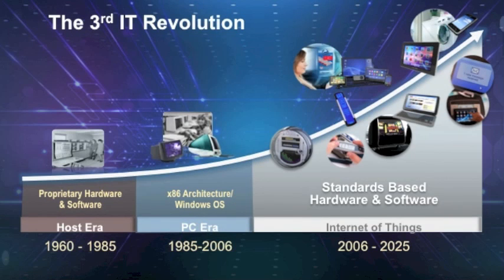The Internet of Things is the third IT revolution. The host era was about proprietary hardware and software and multiple people sharing one machine. In the PC era, the shift happened to more open hardware and individual devices per person. Today, devices are becoming cheaper, smaller, smarter and more connected, and we are now seeing an explosion of such devices driving the Internet of Things era, where there will be many more devices than people. These devices will be taking on a variety of functions across many industries and fields — from industrial control, environmental monitoring, logistics, transportation, smart energy, telehealth and many more — making our world smarter and more efficient. Many people call this the third IT revolution.